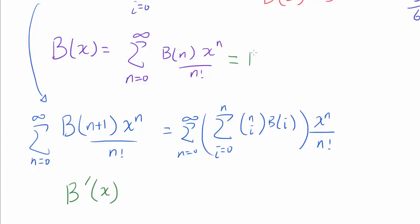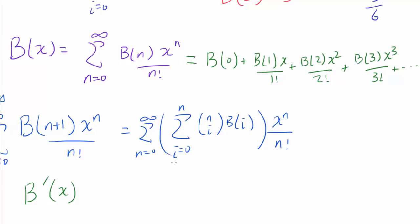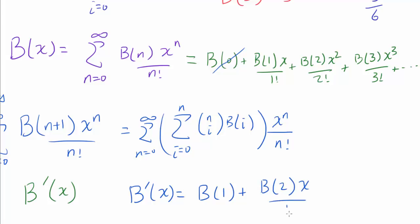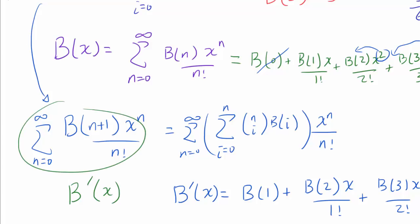Why is the left-hand side b prime of x? Well, b(x) by definition equals b(0) plus b(1)·x over 1 factorial plus b(2)·x² over 2 factorial plus b(3)·x³ over 3 factorial, and so on. When we differentiate: b(0) goes away, b(1)·x over 1 factorial becomes b(1), b(2)·x² over 2 factorial becomes b(2)·x over 1 factorial, b(3)·x³ over 3 factorial becomes b(3)·x² over 2 factorial, and so on. That is exactly what we have on the left-hand side, so the left-hand side is indeed b prime of x.